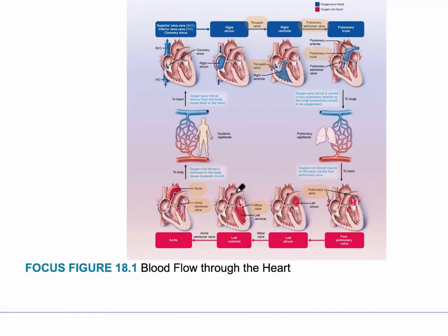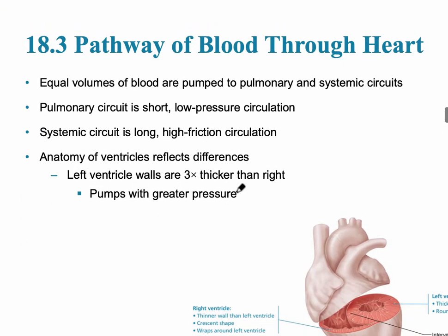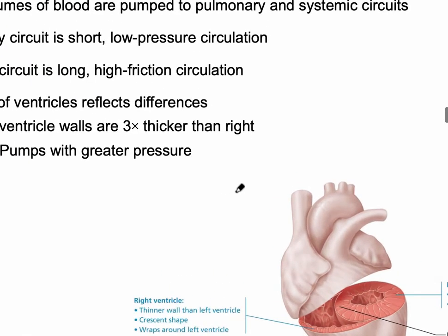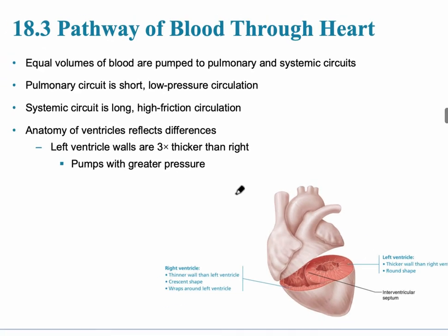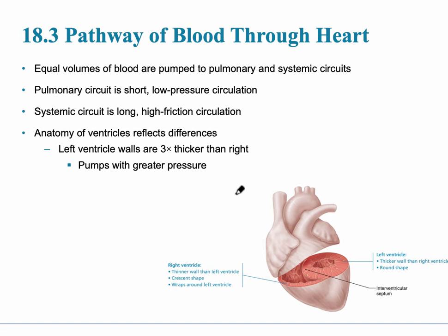It's hard to imagine, but we have equal volumes of blood on both sides of the heart. The right side goes to the pulmonary circuit and the left side supplies the systemic circuit. The pulmonary circuit is very short, which makes sense because the lungs are just next door. The systemic circuit is very long and requires high pressure, so the left ventricular wall is three times thicker than the right side.